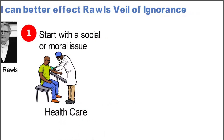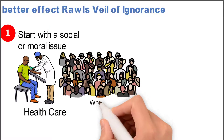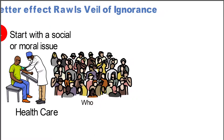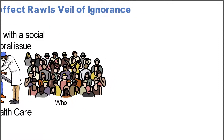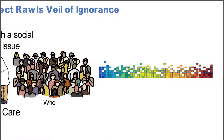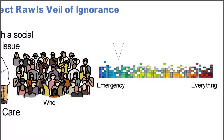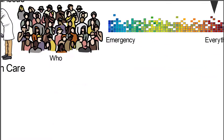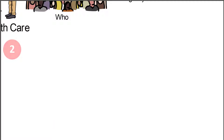The issue behind health care is who is going to get it, and also not just who, but what level of health care they're going to get — from emergency health care all the way to everything possible. So the question is: how can we decide that?